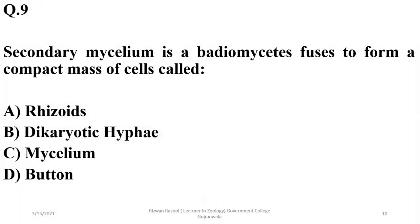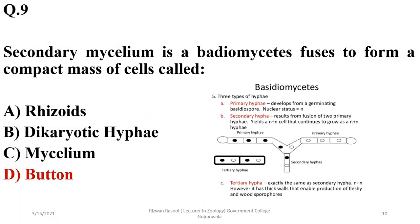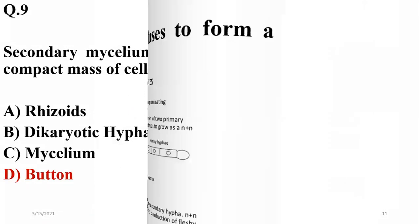Secondary mycelium in basidiomycetes fuses to form a compact mass of cells called button, and these are actually dikaryotic hyphae which lead to the formation of a button-like structure or mass of cells.